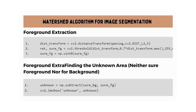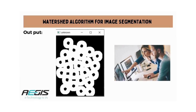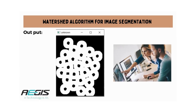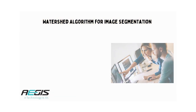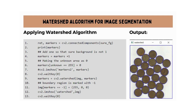Now for foreground extraction: with this image code, you can implement foreground extraction easily and also find the unknown area — the area that is neither sure foreground nor sure background. Here you can see the output for foreground extraction and finding the unknown area. Now in this image code, you can see how to apply the watershed algorithm. After implementation, you will get the result as seen here in the output image.